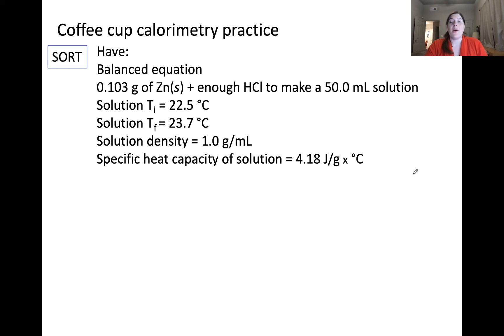The information that we're given includes the balanced equation, the amount of zinc and HCl we have, the initial temperature and final temperature of the solution, the solution density and its heat capacity. What we need is delta H in joules for the reaction, which shows one mole of zinc reacting.